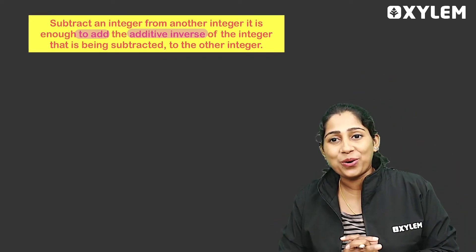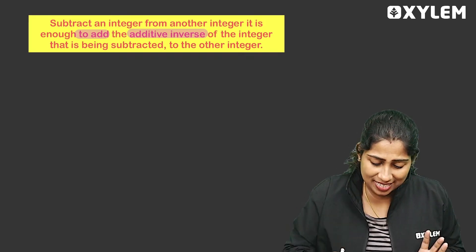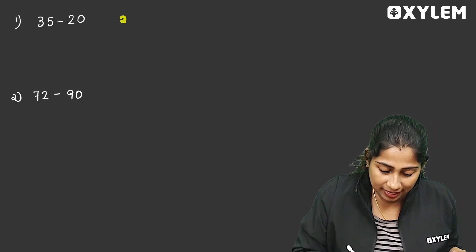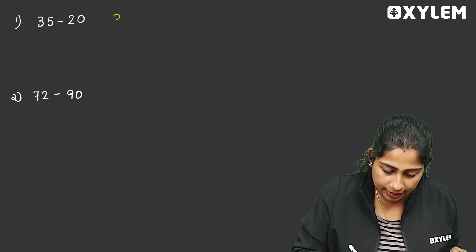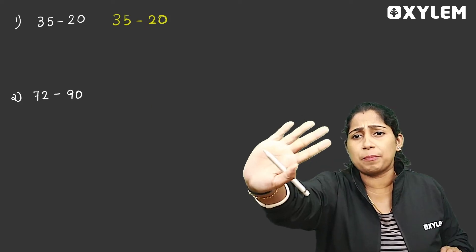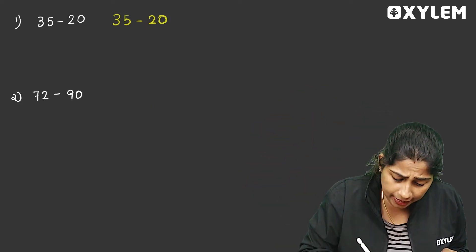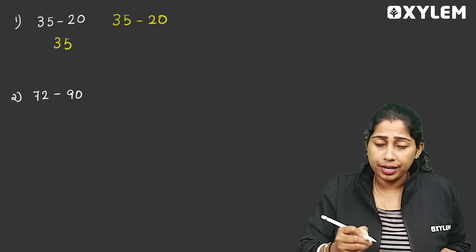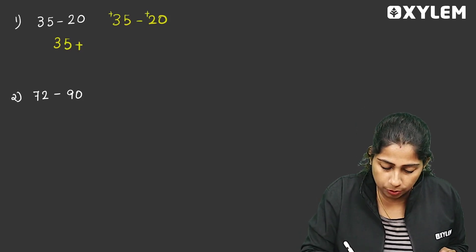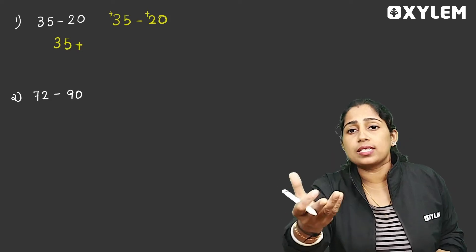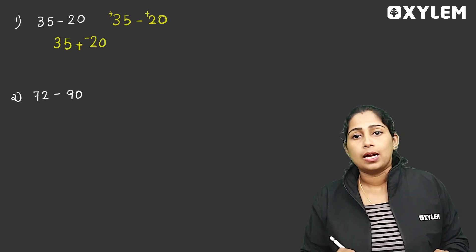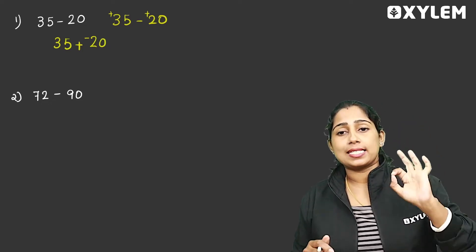It is very easy to add — it is enough to add. We will do it here. 35 minus 20. Now I will say: subtraction becomes addition. 35 plus — plus 35. Now, plus 20's additive inverse is minus 20. Minus 20. So what do I say? Subtractions become: take the additive inverse.